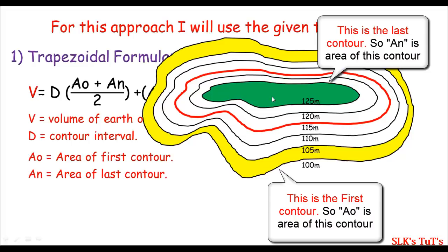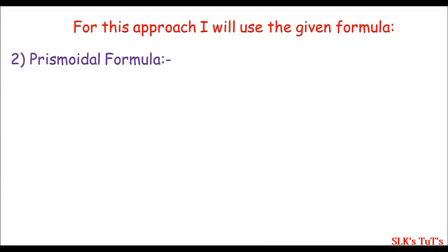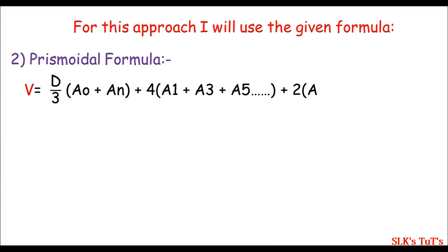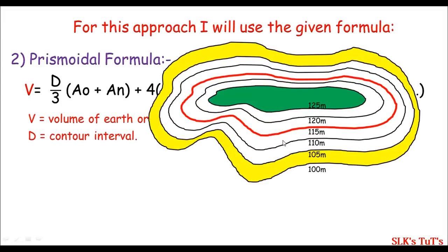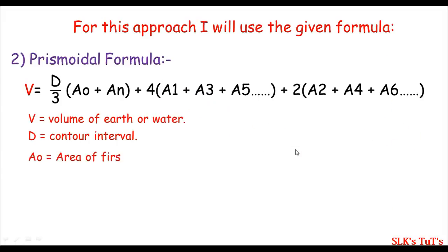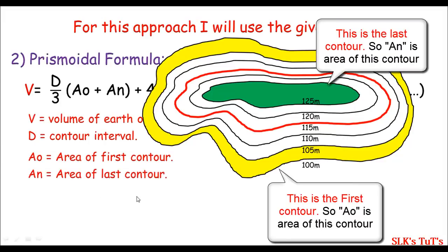The green area represents the area of the last contour. In the formula, A1, A2, A3 represent the areas of the remaining contours. The prismoidal formula is also given: V represents volume of earth or water, D is the contour interval (vertical distance between two contour lines), A' is the area of the first contour, and A_n is the area of the last contour.